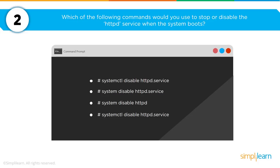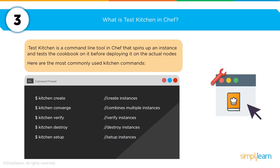You will also be asked: which command would you use to stop or disable the HTTP service when the system boots? The four options are: `systemctl disable httpd.service`, `system disable http.service`, `system disable httpd`, or `systemctl disable httpd.service`. The correct answer is the first option: `systemctl disable httpd.service`.